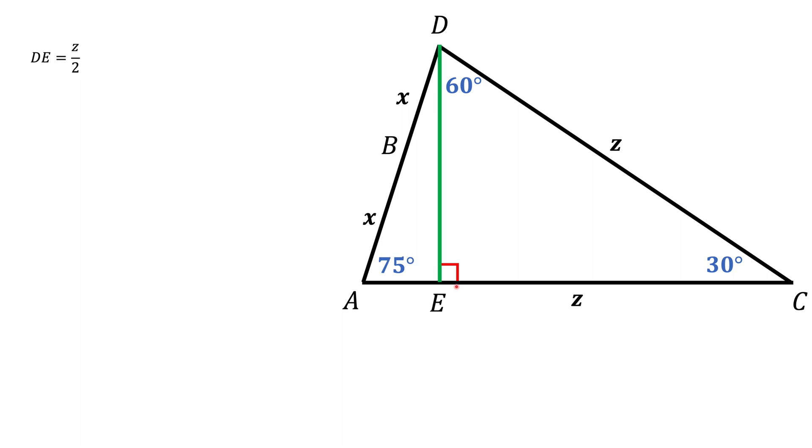And the other leg, CE, should be square root of 3 times larger than the side DE. That's what we're going to get.